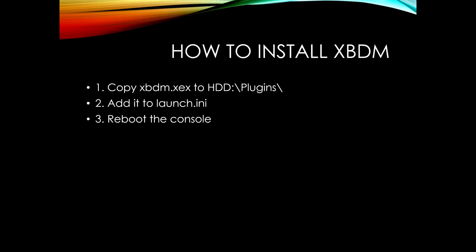To install this plugin, all you need to do is copy the XBDM.XAX file into your plugin folder on your Xbox 360, wherever you put all the other plugins you normally use. Add it to your Dash Launch INI file by launching into Dash Launch and going under plugins, where you can add up to five plugins. Choose this one by locating it on your drive, then save the INI file and reboot your console — the plugin will be up and running.